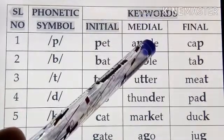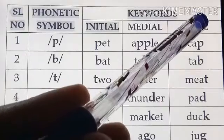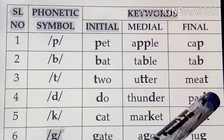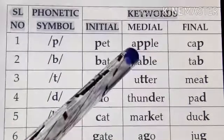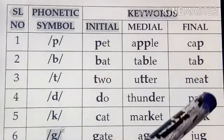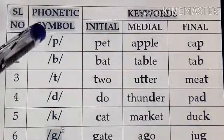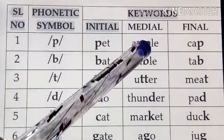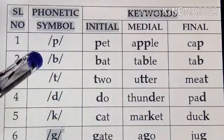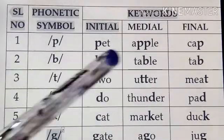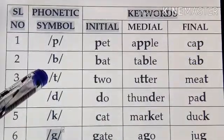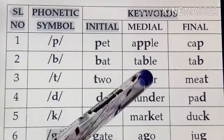The sound is given in the medial position and also in the final position. So these are three varieties of keywords given here, which indicate the sound in the initial position, medial position, as well as the final position. For example: 'pat' (initial), 'apple' (medial), 'cap' (final). Then /b/: 'bat', 'table', 'tab'.